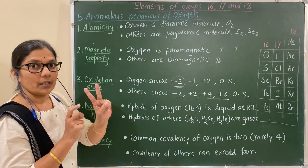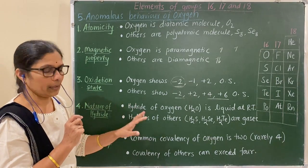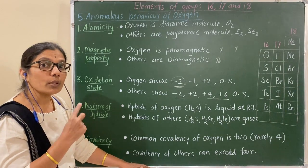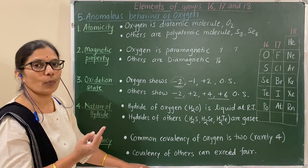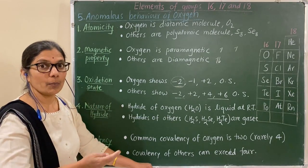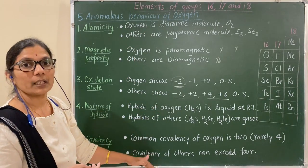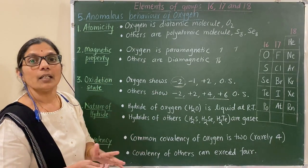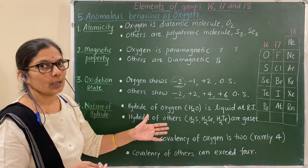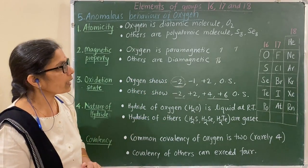Next, covalency — that is the number of bonds. Oxygen forms two bonds; in rare cases it may form four bonds. But other members of the group form more than four bonds — for example, sulfur in SF₆ shows a covalency of six. Also, oxygen is in a gaseous state at room temperature while other members are solid. These are the anomalous properties of oxygen — how oxygen differs from other members of the group.